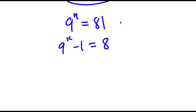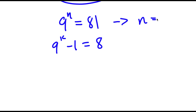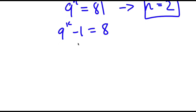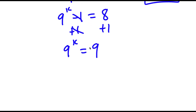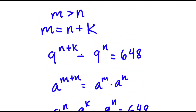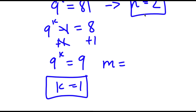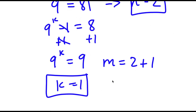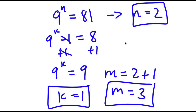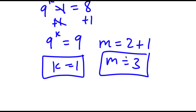For 9 to the power of n equals 81, n is obviously equal to 2, because 9 squared is 81. And for 9 to the power of k minus 1 equals 8, I add 1 on both sides, so 9 to the power of k is equal to 9, meaning k is equal to 1. Now, remember how we set m equal to n plus k, so m equals 2 plus 1, which means m is equal to 3. So n is equal to 2 and m is equal to 3 — these are my solutions.